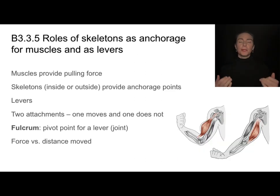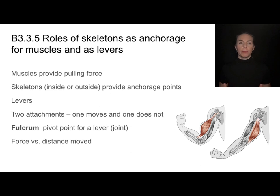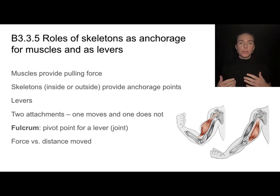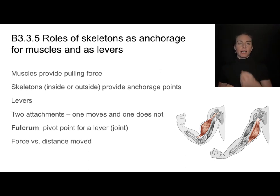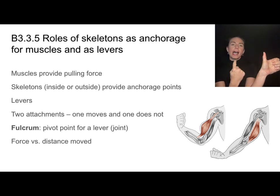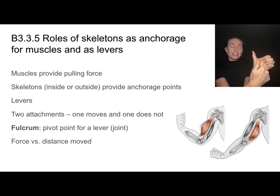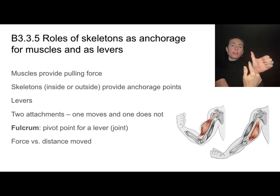Muscles provide the pulling force, but our skeleton also serves as an attachment point for our muscles. It turns our joints into a lever. In order for a lever to work, we need two attachment points — one that moves and one that does not. A muscle connects the part of the lever that does not move to a part that does move. When the muscle contracts, it moves the lever, and it all pivots around a central point called a fulcrum.